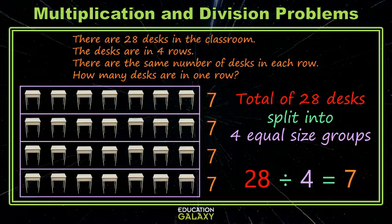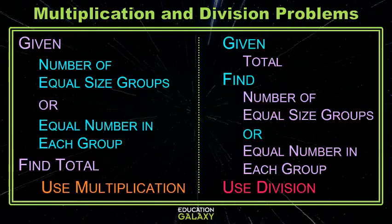So in summary, if you're given the number of equal size groups or the number that are in each group and you're looking for a total, use multiplication. If you're given a total and you want to find the number of equal size groups or how many are in each group, then we want to use division. Now you can solve word problems without panicking.